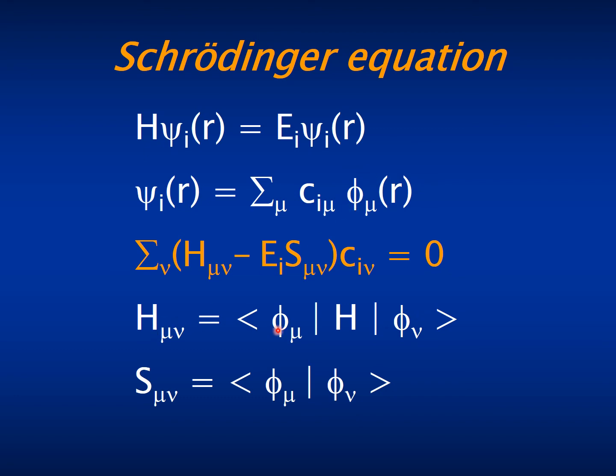The two matrices involved are the matrix elements between the basis orbitals of the Hamiltonian operator and the overlap between the basis orbitals.